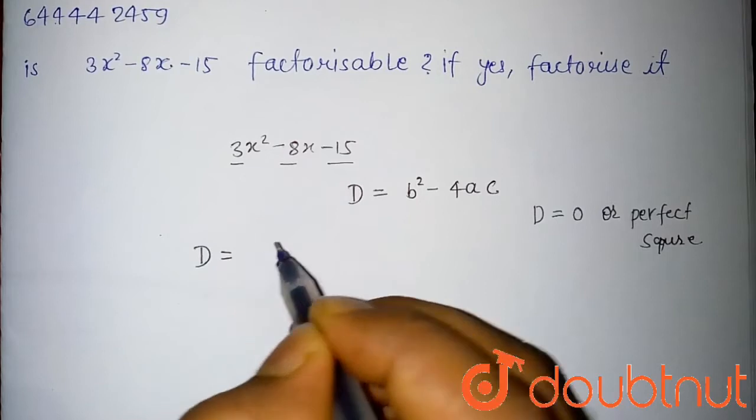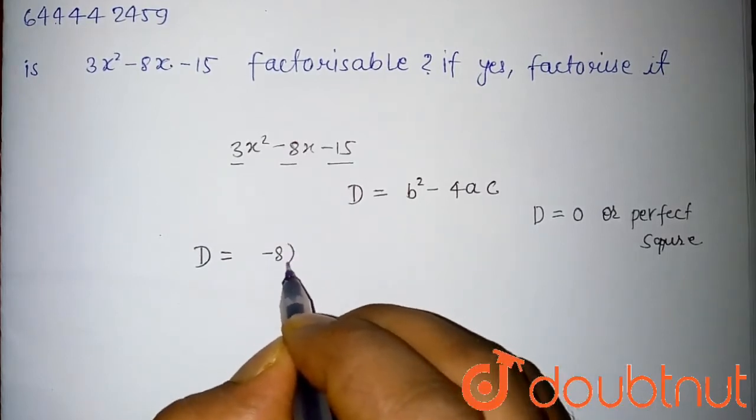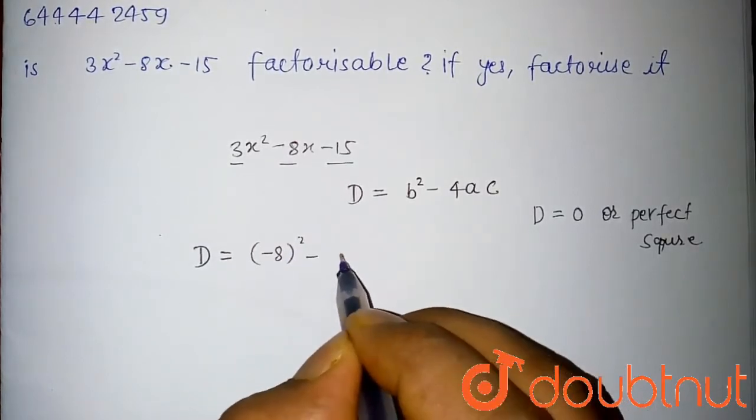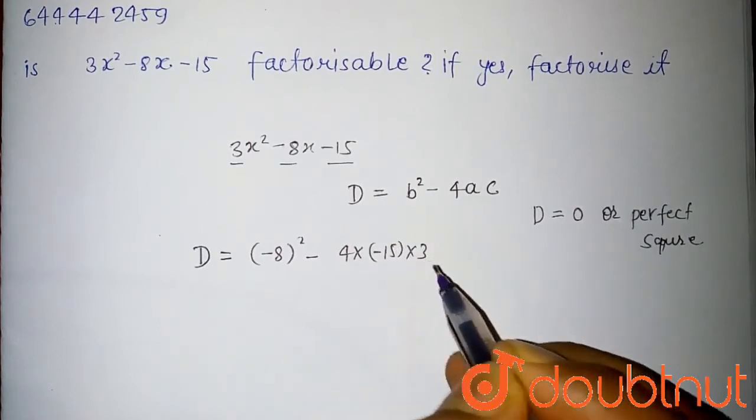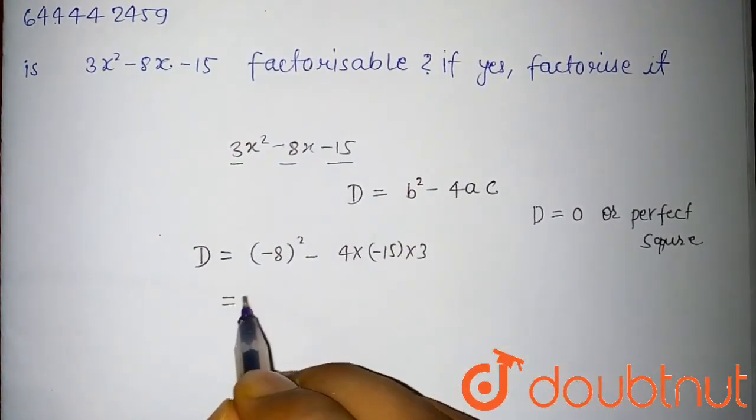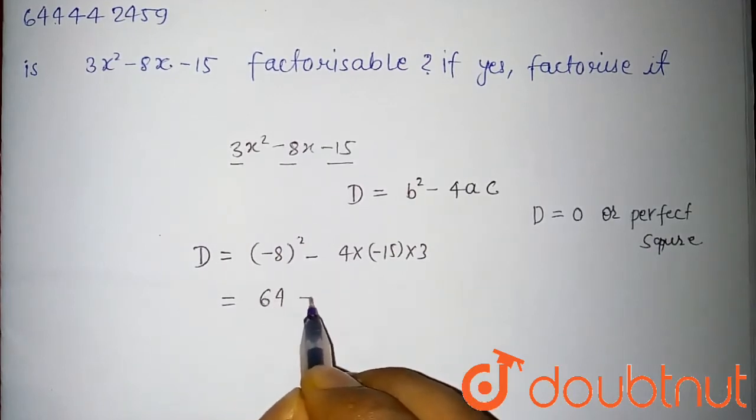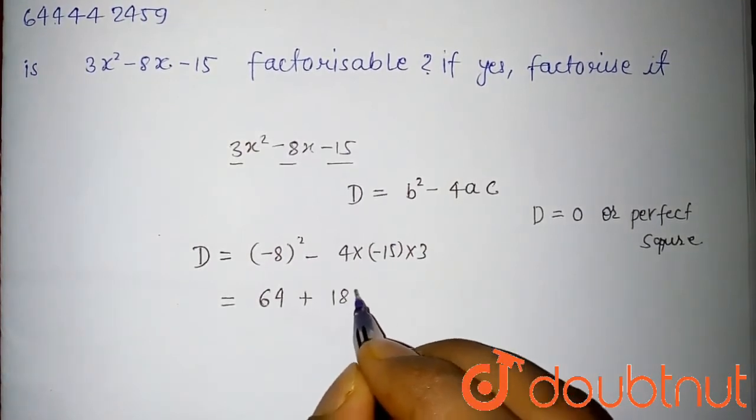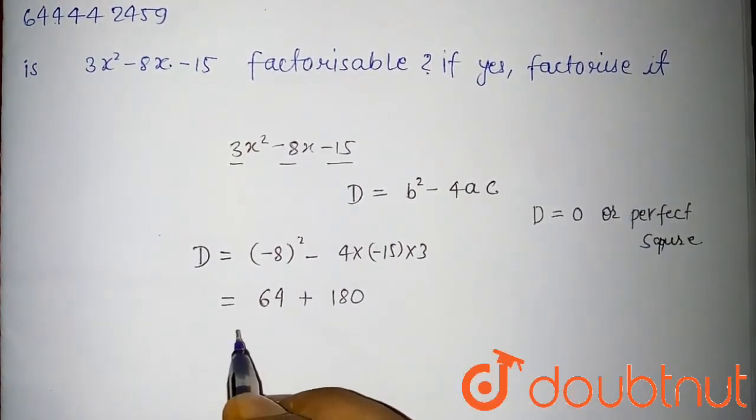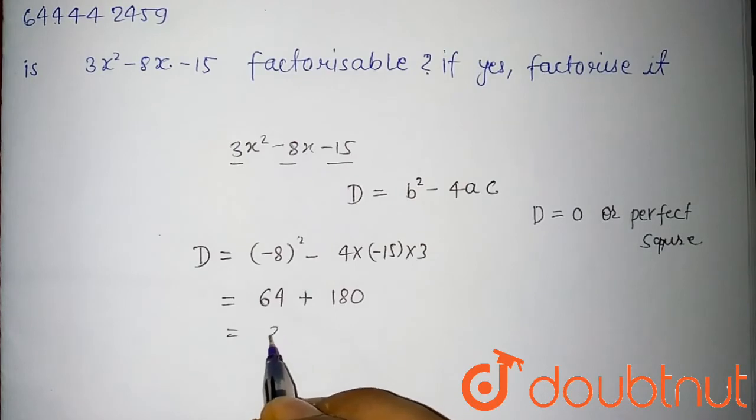D will be (-8)² minus 4 into (-15) into 3 and this will be 8 into 8 is 64 plus 180 and this will be 244.